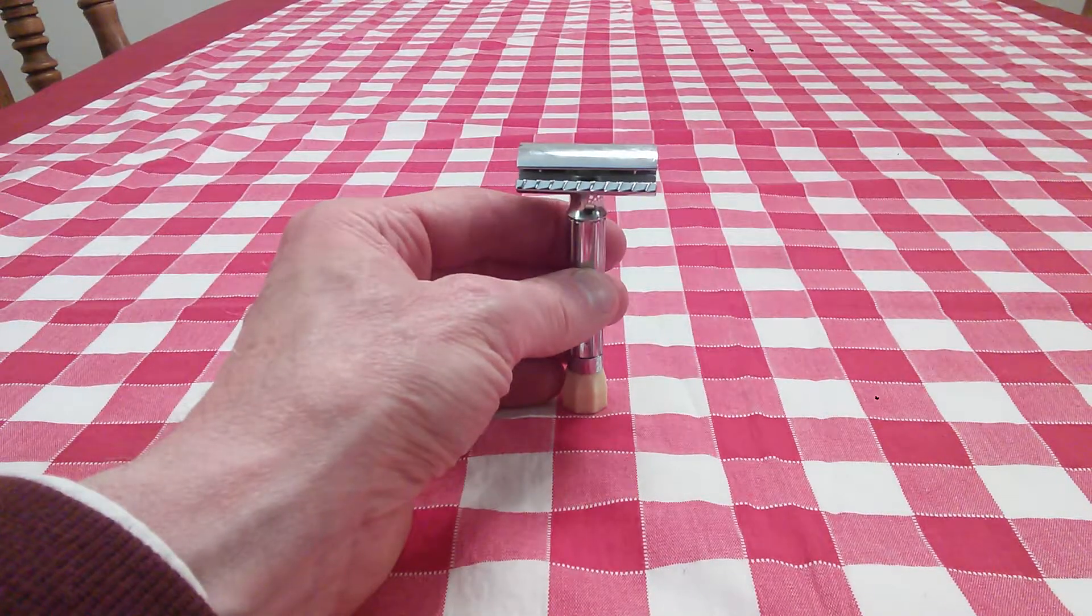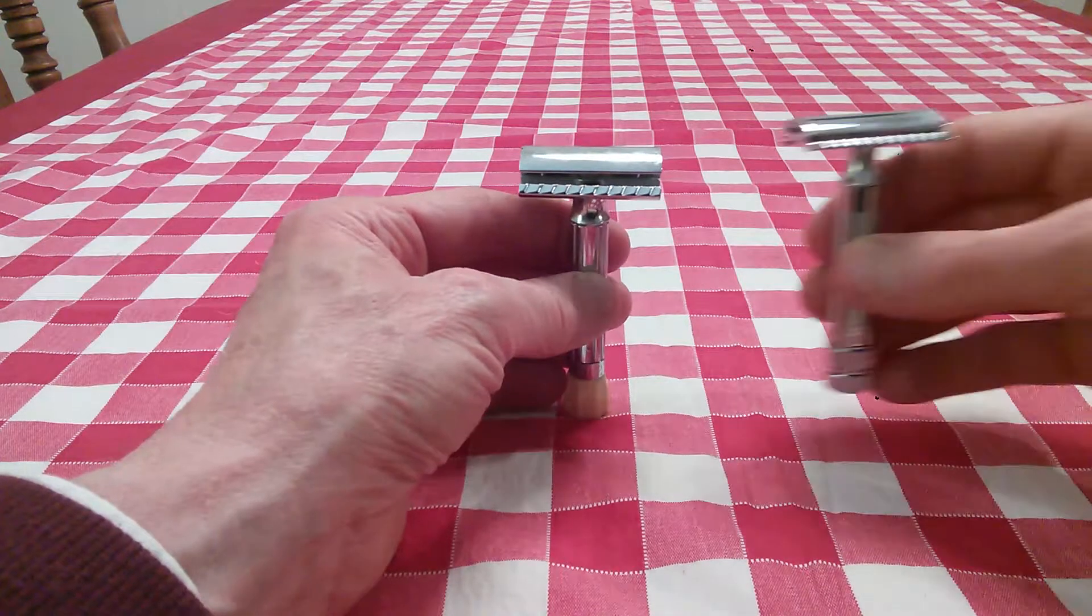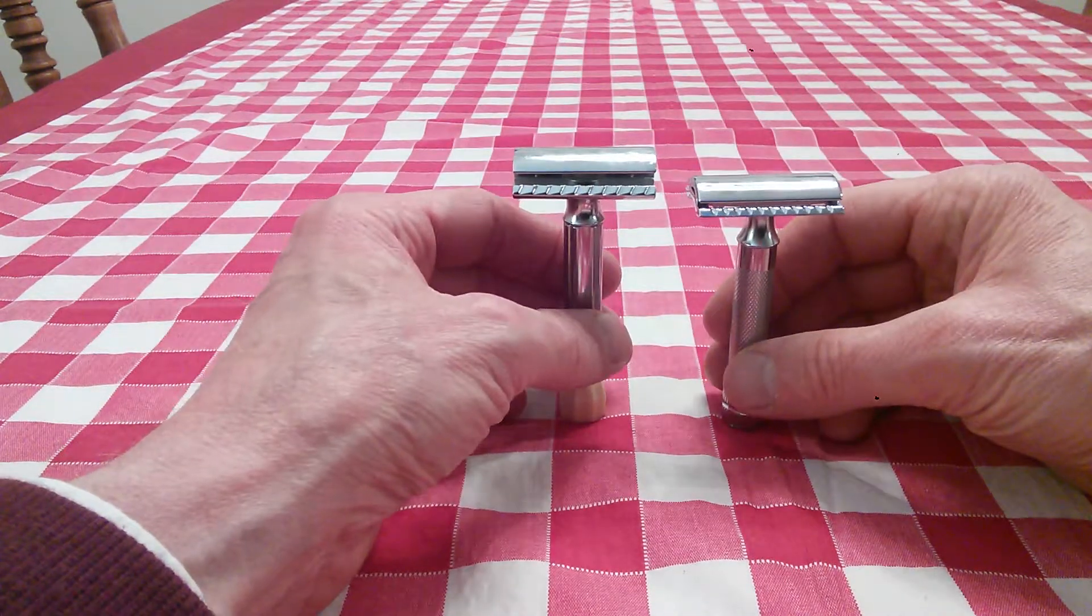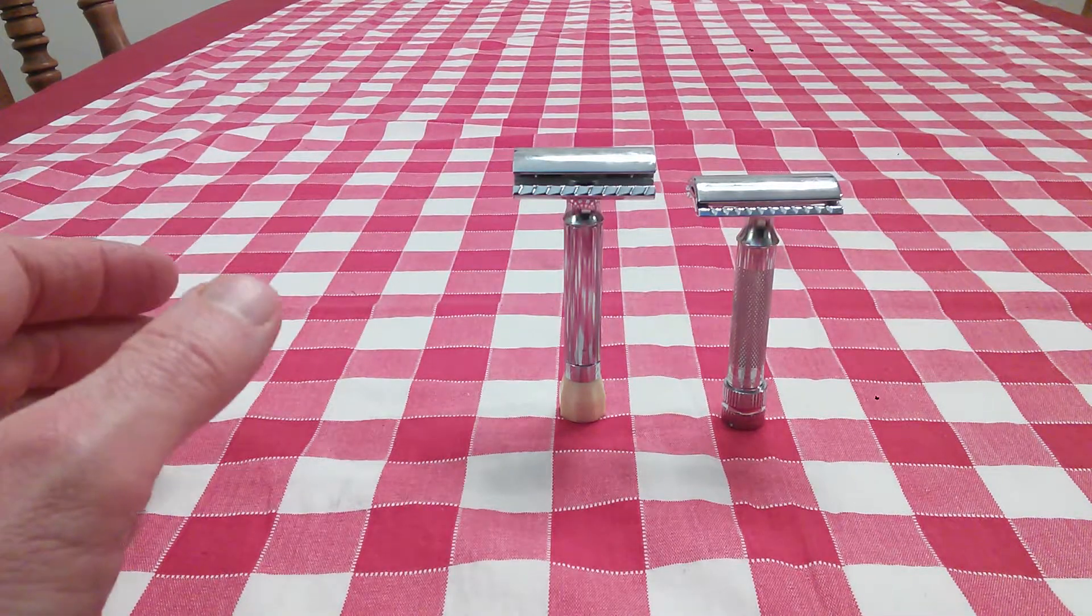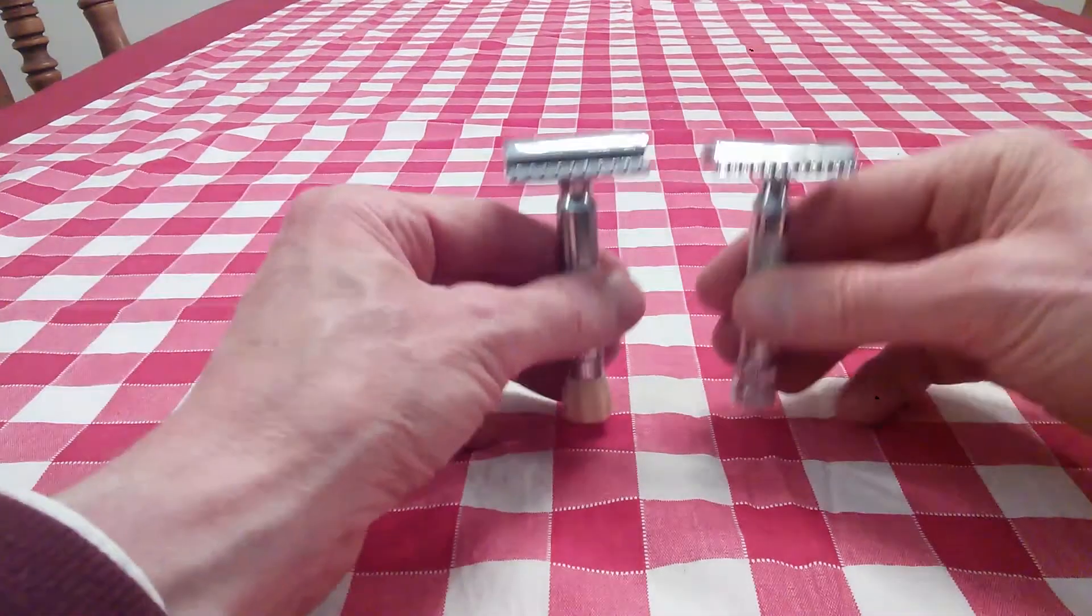Let's take a look at it next to another Merkur, the Merkur HD34C. Now you can immediately see that the HD34C is a little bit shorter and it's not as heavy.